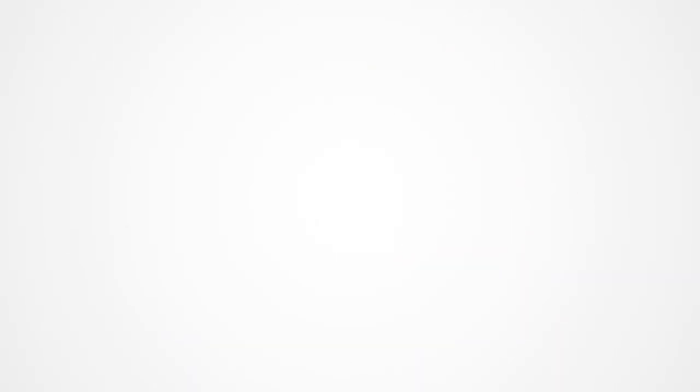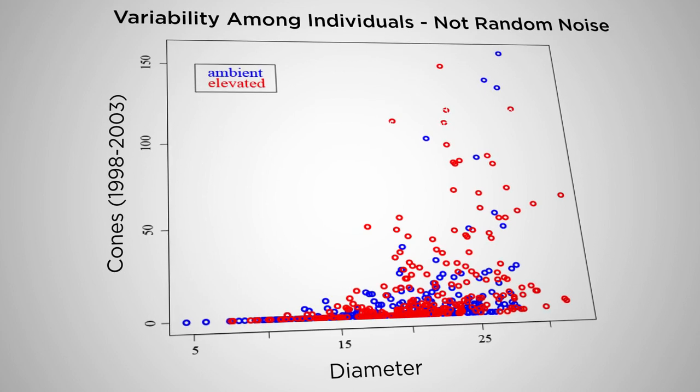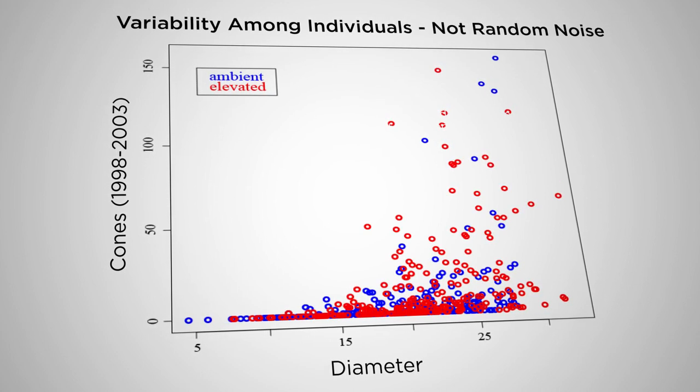Bayesian methods or probabilistic models generally are a framework that allows for the flexibility to treat all unknowns as random variables — the unknown knowns, the things you know are unknown. For instance, looking at fecundity in trees, you know that fecundity generally increases as trees get bigger, but in some regions that function looks different than in others, and you don't necessarily need to know exactly why. That difference itself is not random noise.